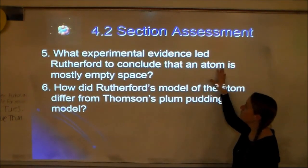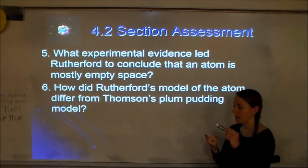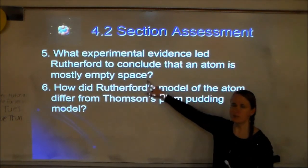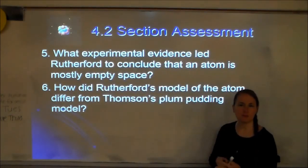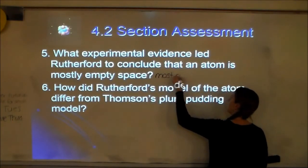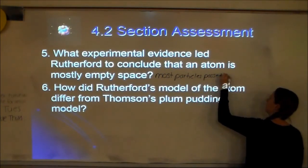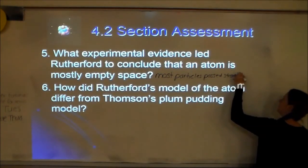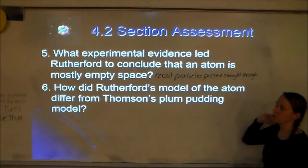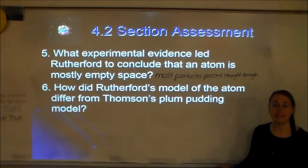What experimental evidence led Rutherford to conclude that the atom was mostly empty space? He had three pieces of evidence: particles passing straight through, particles deflecting, and particles bouncing back. The evidence that most of the atom is empty space is that most particles passed straight through — they clearly didn't hit anything.